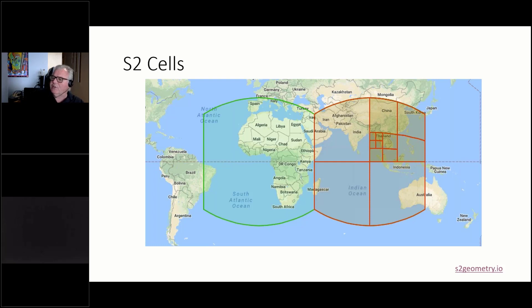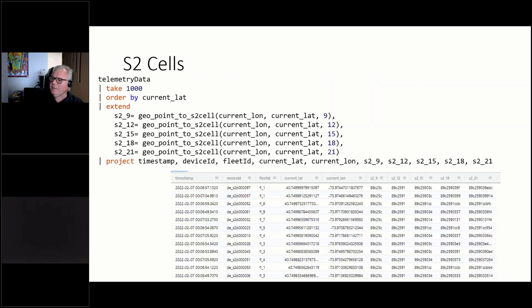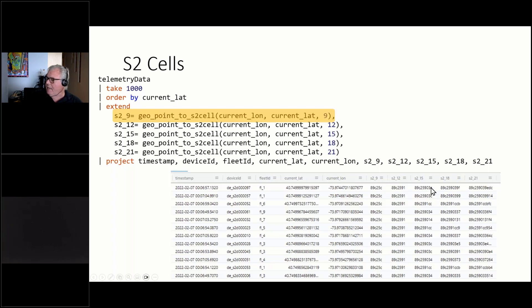There are functions built into KQL that calculate S2 cells — for example, geo_point_to_s2cell() takes a latitude, longitude, and S2 level and tells you which cell it's in. Each cell has an ID. So at level 9 all these points might be in the same S2 cell, but at level 15, which has smaller cells, only some pairs are in the same cell. At level 21 the cells are small enough that none of them are in the same cell. If you care less about precision, you can query on S2 cells to quickly determine whether two objects are close — are there two planes about to collide? Are two GPS readings close enough that the error is inherent in the signal?